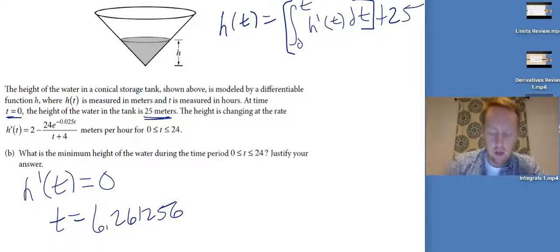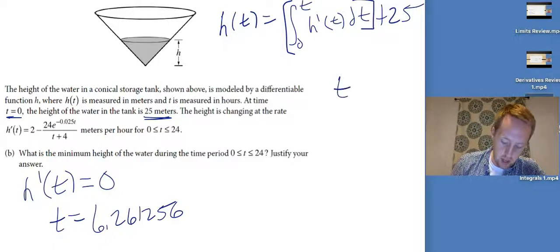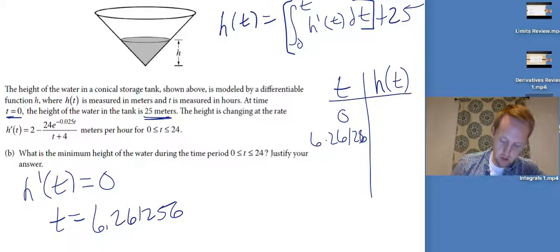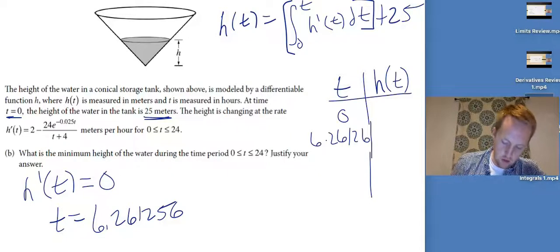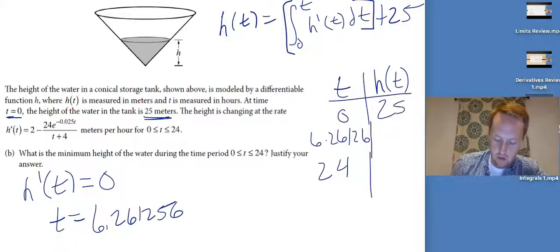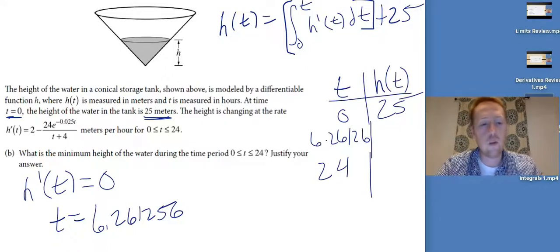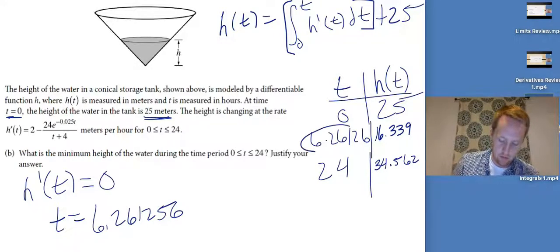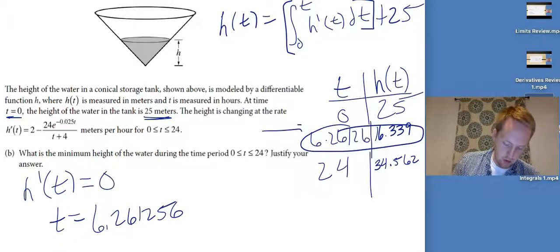That will give me the height at any time T. So now I just need to make a table: 0, 6.26126, and 24. When I integrate from 0 to 0, I don't need the calculator — that's going to be 0 plus 25, which is 25. I need to go into my calculator and get the other ones. After plugging them in, it looks like the middle value is the minimum. Remember, this table is justification enough.